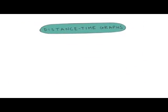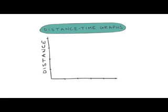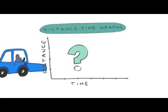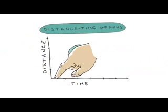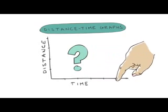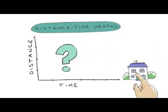First, let's look at distance time graphs. These graphs can be used to represent a journey. Are we nearly there yet? The vertical axis shows the distance travelled from the start point. The horizontal axis records the time. All we need now are the journey details.